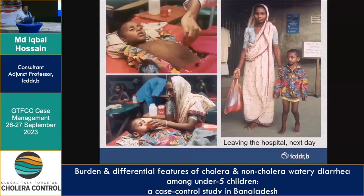This female child was admitted in the morning with cholera and severe dehydration. After receiving IV fluid in the afternoon, there was still some purging but the child improved from severe dehydration to some dehydration and was treated accordingly. The next day, after improvement, the child was discharged home.